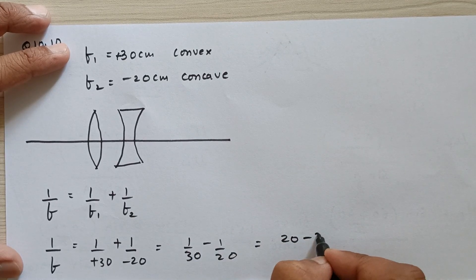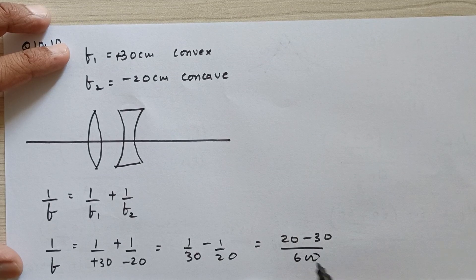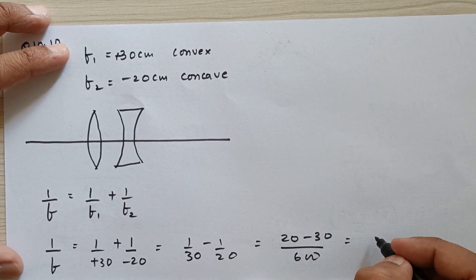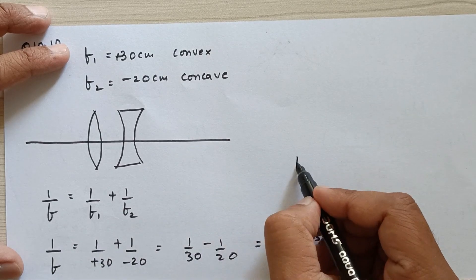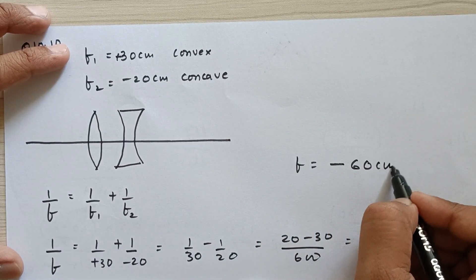This equals 20 minus 30 upon 600, which is minus 10 upon 600. On reversing, the focal length turns out to be minus 60 centimeters.